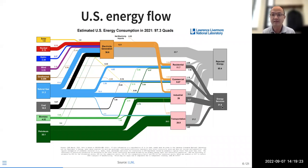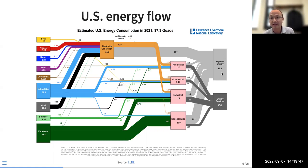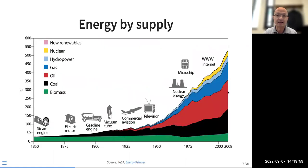Energy service is only a portion of primary energy. Roughly 30% of primary energy is really harvested for actual energy service, while 65% or more is wasted — that's why energy efficiency is so important. From a historical perspective, for a very long time biomass was the dominant energy source, then we transitioned to coal, then to oil and natural gas.